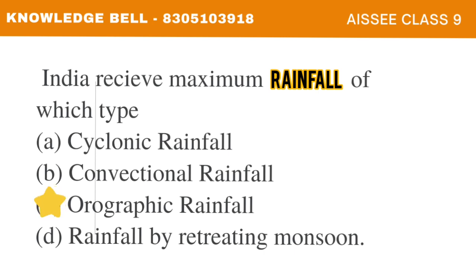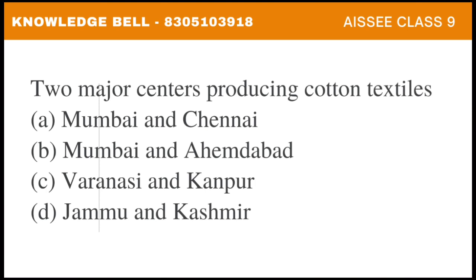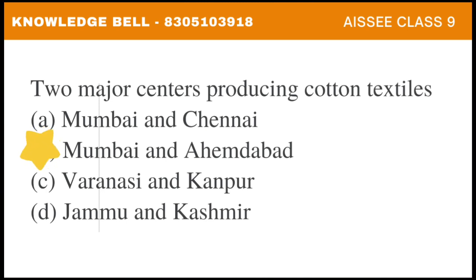The next question is: The two major centres producing cotton textiles are — A. Mumbai and Chennai, B. Mumbai and Ahmedabad, C. Varanasi and Kanpur, D. Jammu and Kashmir. We have to identify which two cities are the major producers of cotton textiles in India. The correct answer is Option B: Mumbai and Ahmedabad. Mumbai and Ahmedabad are the two major centres for the production of cotton textiles.